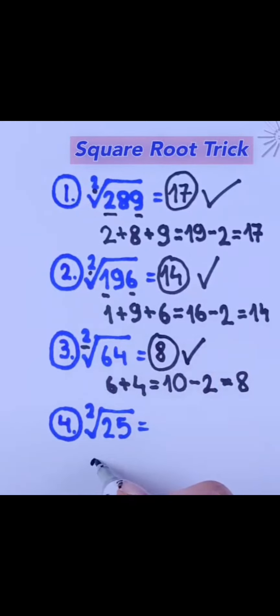Finally, consider 2 and 5. Adding these together gives you 7. Subtract 2, and the result is 5.